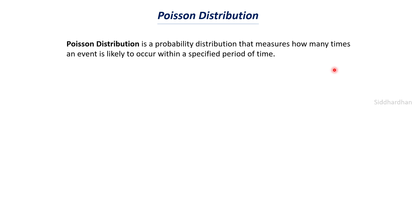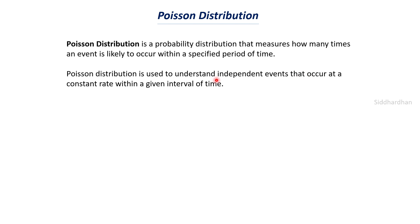Let's try to understand the significance of this distribution. Poisson distribution is used to understand independent events that occur at a constant rate within a given interval of time. These random events occur at a constant rate — in the previous example the rate is 10 times per hour. This understanding of rate is very helpful for us to plan for the future. It will make more sense once we look at some examples.